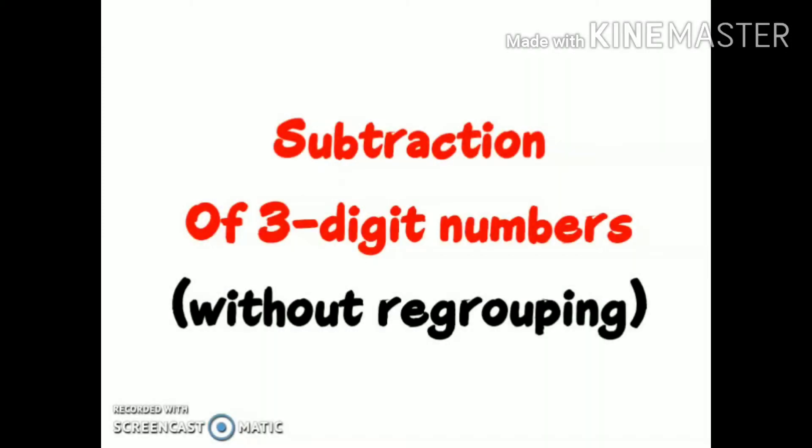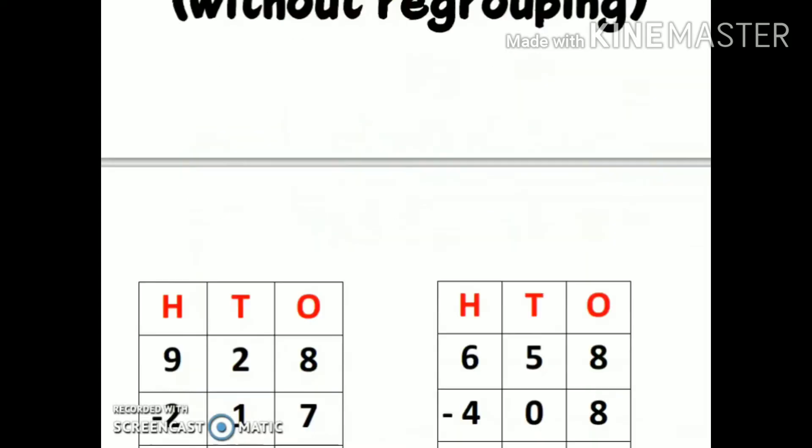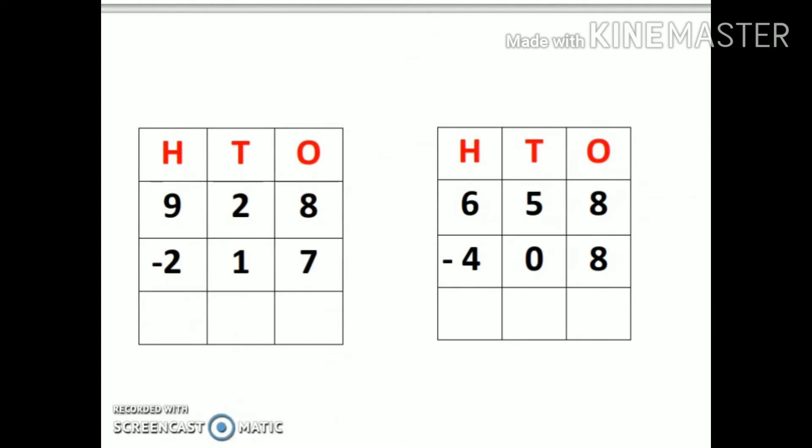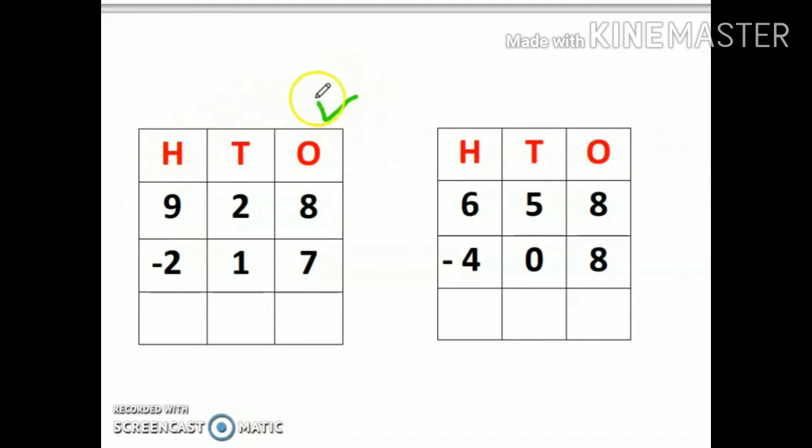Hi everyone, today we are going to discuss subtraction of three-digit numbers without regrouping, which means simple subtraction of three-digit numbers. Always remember that whenever there is any subtraction or addition sum, we always have to start from ones place. Start from right to left: ones place, then tens, then hundreds, and so on.